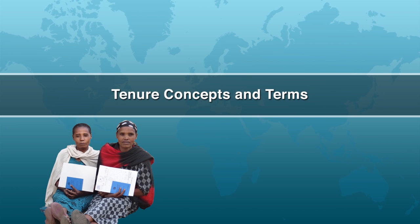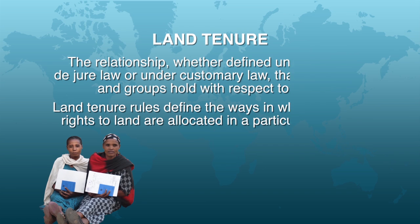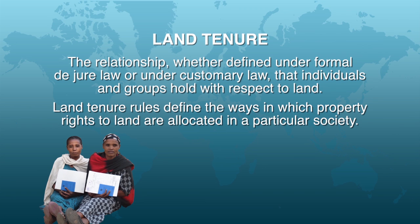Land tenure is defined as the relationship, whether defined under formal de jure law or under customary law, that individuals and groups hold with respect to land. Land tenure rules define the ways in which property rights to land are allocated in a particular society.